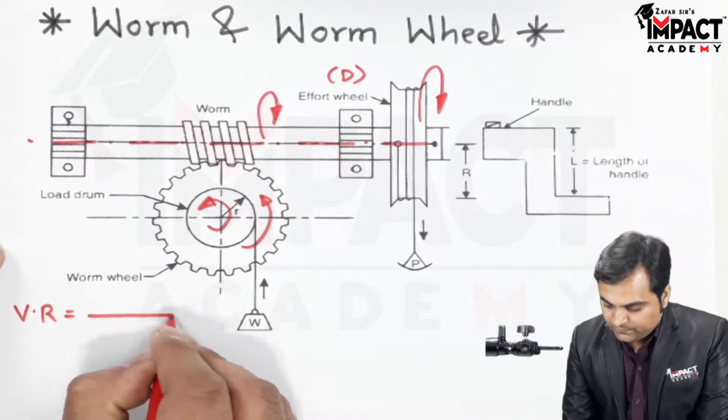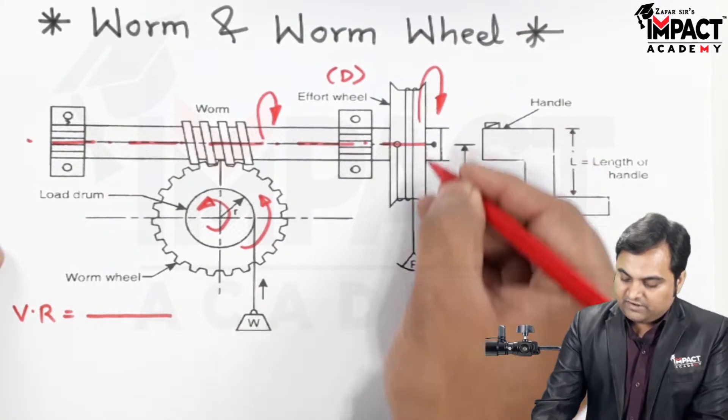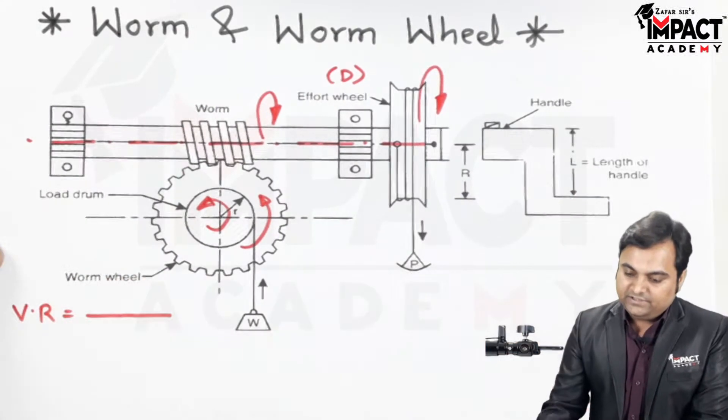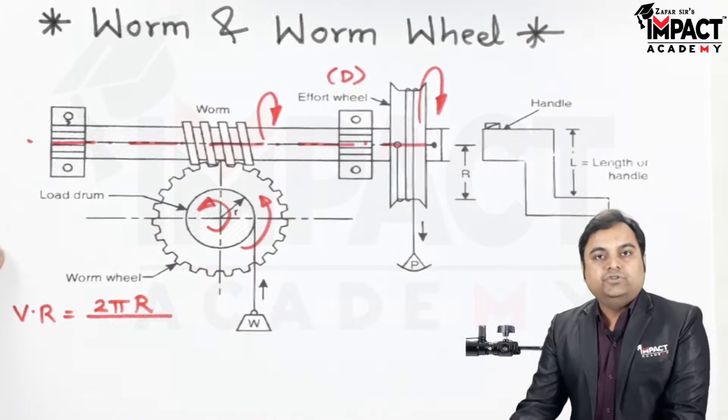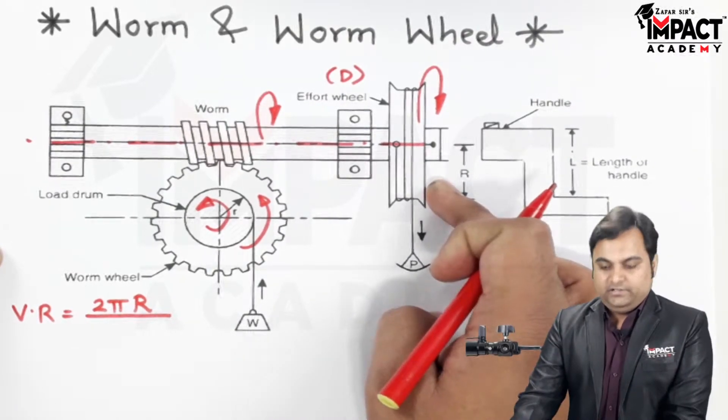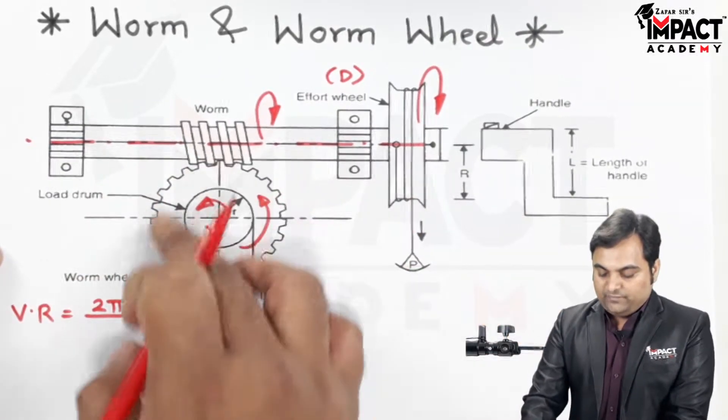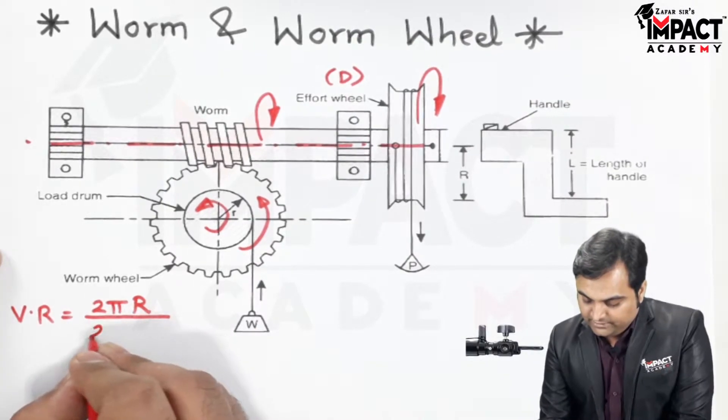the distance traveled by the effort wheel, and that distance is given by the circumference which is 2πR for the effort wheel. Then for the load drum we can say it is given by 2π